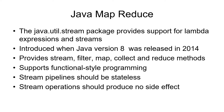Java supports MapReduce through the java.util.stream package, which provides support for lambda expressions and streams. It was introduced in 2014 with Java version 8 and updated with Java version 9. It provides streams, filters, maps, collect, and reduce methods. It's a functional style of programming where the input is not changed, the output is stateless and should be the same every time, and operations should produce no side effects — very much like Haskell.